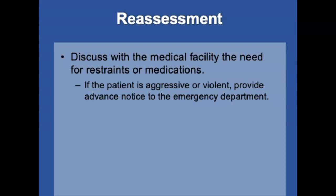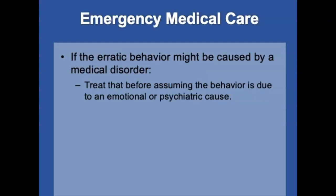Discuss with the medical facility the need for restraints or medications before instituting these interventions. If erratic behavior might be caused by a medical disorder, treat that disorder before assuming it is due to an emotional or psychiatric cause. Some measures could include oxygen therapy, testing blood glucose, administering dextrose, or general interventions for hypothermia or shock management.